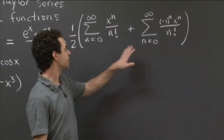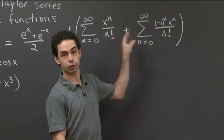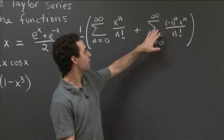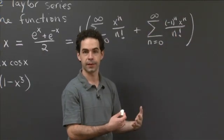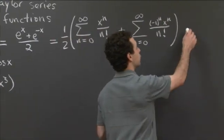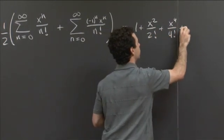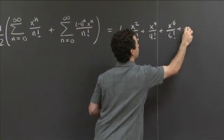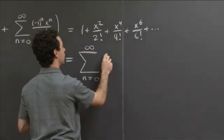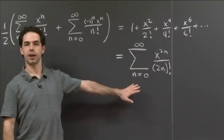When you add these two series together, when n is even, you get x^n/n! plus x^n/n!, giving 2x^n/n!, and then multiplying by one-half gives x^n/n!. When n is odd, you get x^n/n! minus x^n/n!, which is 0. So the series looks just like e^x except the odd terms die off, leaving 1 + x²/2! + x⁴/4! + x⁶/6! + ... , which in summation notation is the sum from n=0 to infinity of x^(2n) over (2n)!. This is the Taylor series for the hyperbolic cosine.